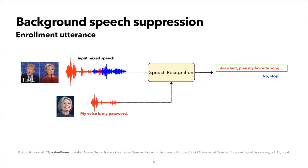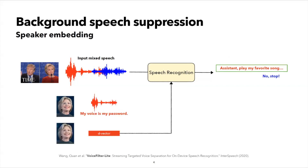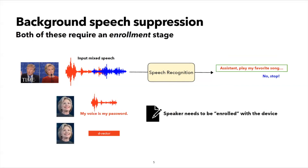One way is to check if the user has registered themselves with the device and use this registered speech, also called an enrollment utterance, to transcribe only the target speaker. A different yet related way is to store an embedding for the target speaker instead. While these are both good approaches, their main limitation is the need for the user to be enrolled with the device. This means the method will not work if a new user, such as a guest, says the device-directed speech.